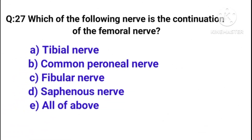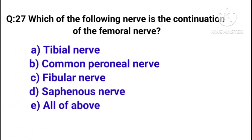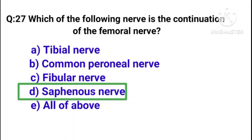Question number 27: Which of the following nerve is the continuation of the femoral nerve? Correct answer is option D, saphenous nerve.